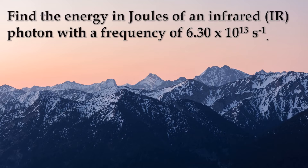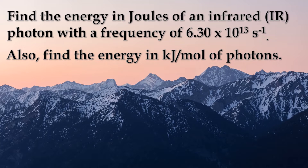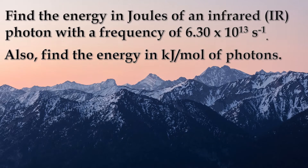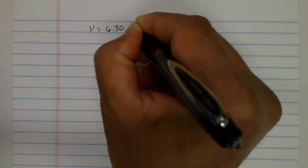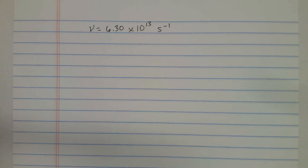Find the energy in joules of an infrared, or IR, photon with a frequency of 6.30 times 10 raised to the positive 13 inverse seconds. Also find the energy in kilojoules per mole of photons. In this problem we're looking at IR radiation. IR photons span a range of frequencies, and for this particular IR photon we're looking at a frequency of 6.30 times 10 to the positive 13 inverse seconds, and we're looking for the energy of one photon.